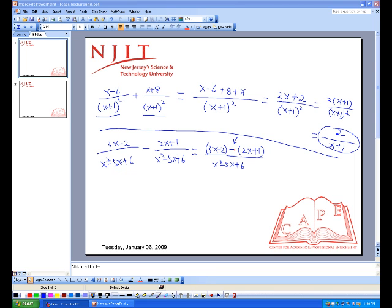Because when you have negatives, 2x plus 1, when you take out the parenthesis, it will become 2x minus 1. So this will become 3x minus 2 minus 2x minus 1, over x squared minus 5x plus 6. Now, 3x minus 2x gives you x, and negative 2 minus 1 will give you negative 3.